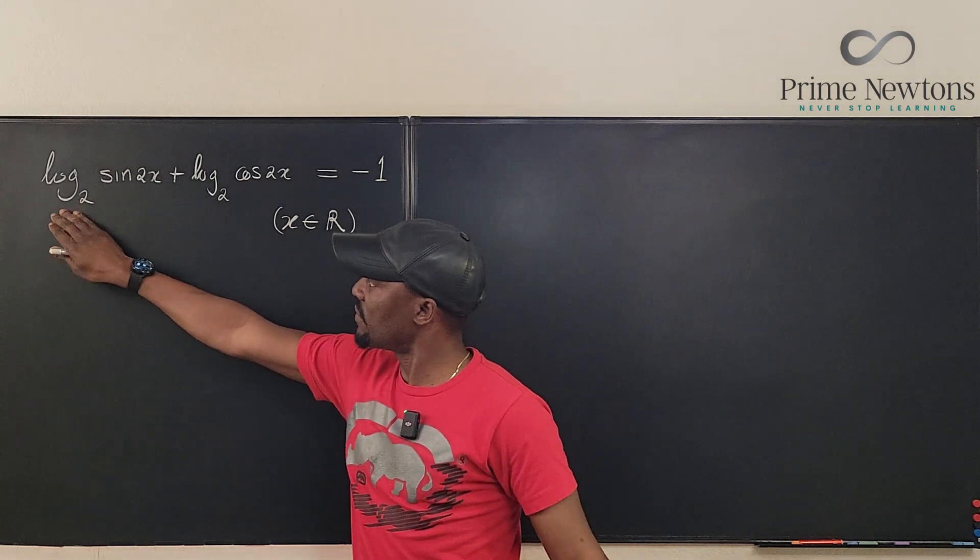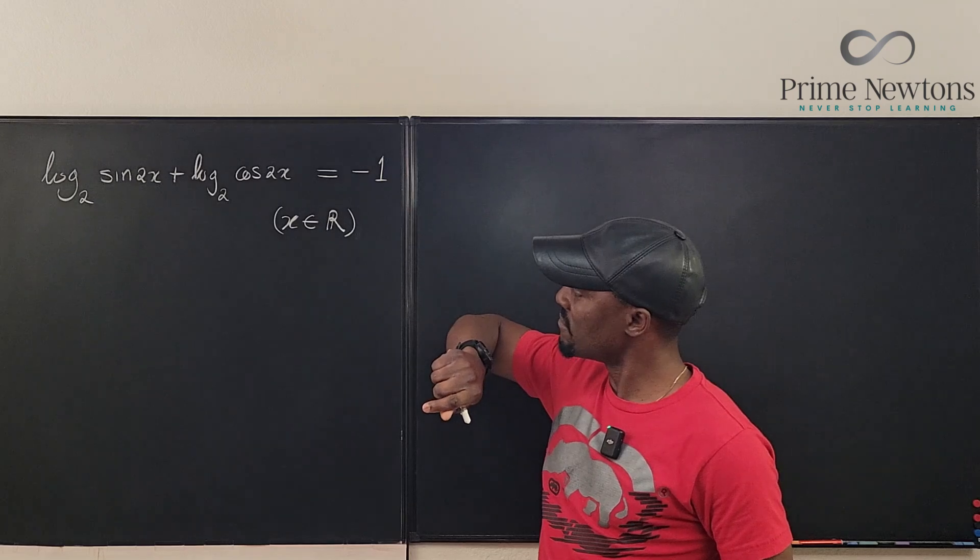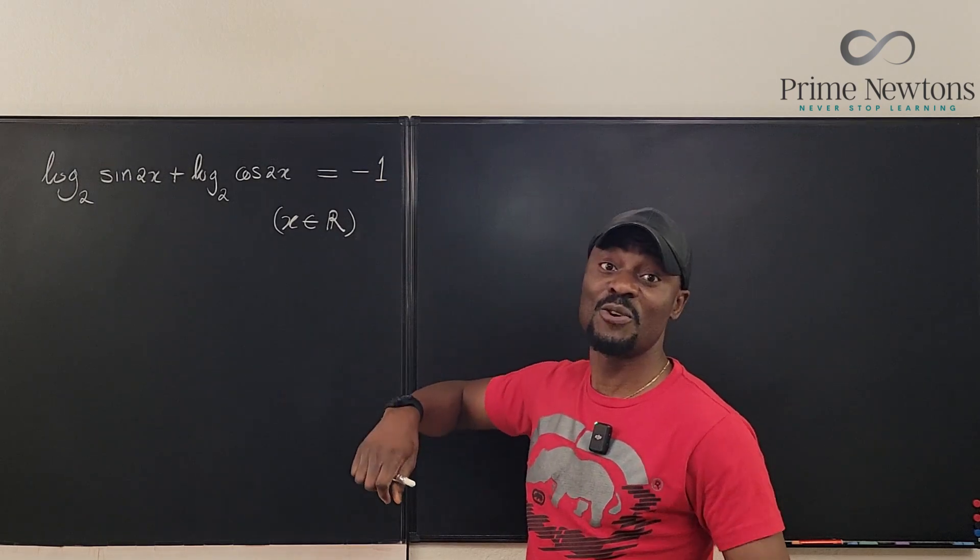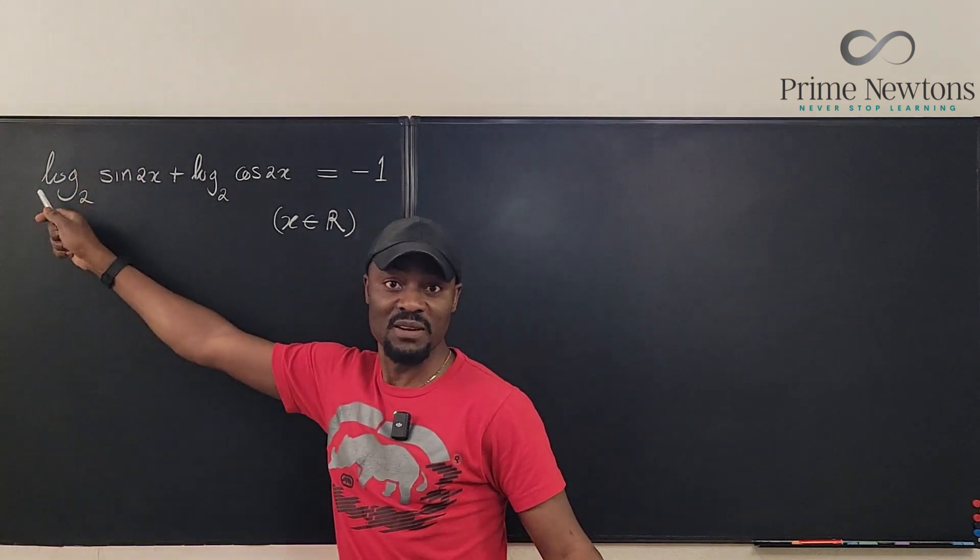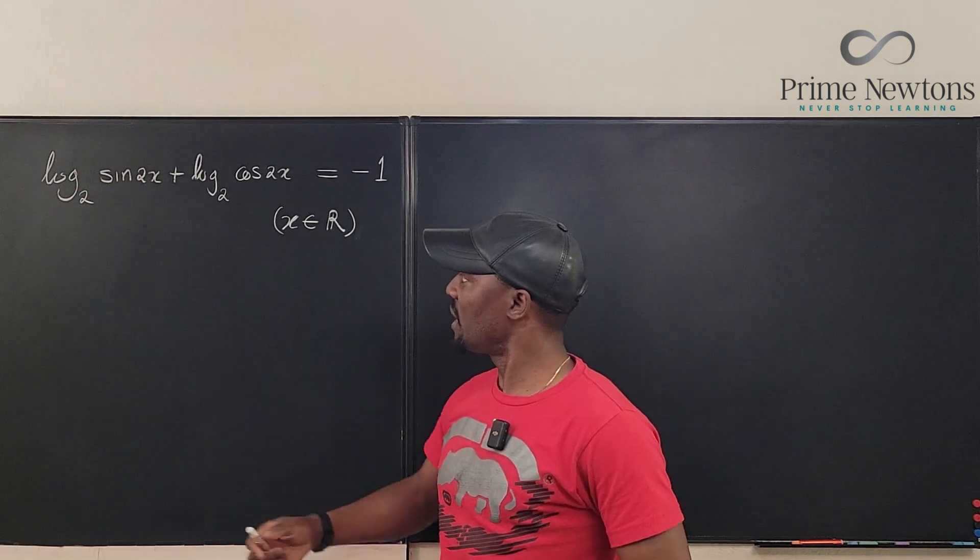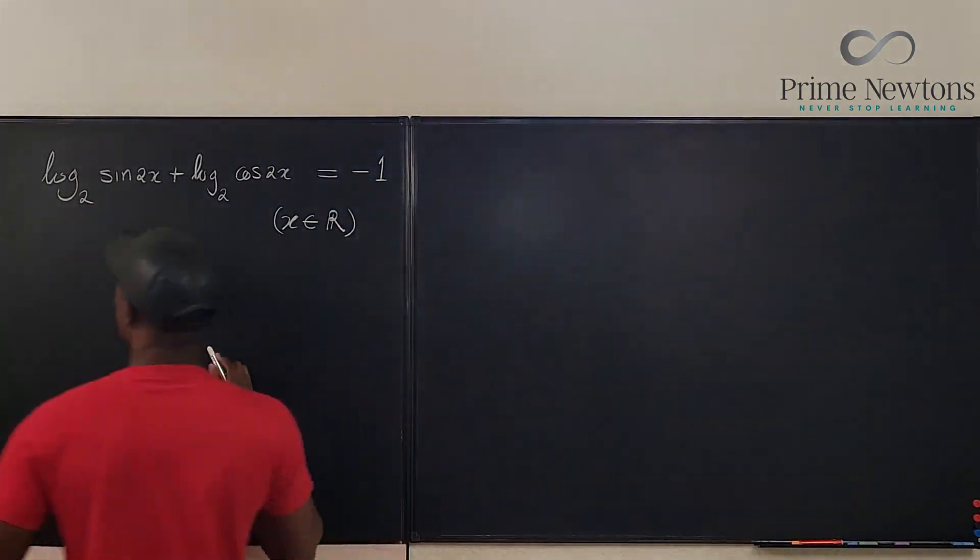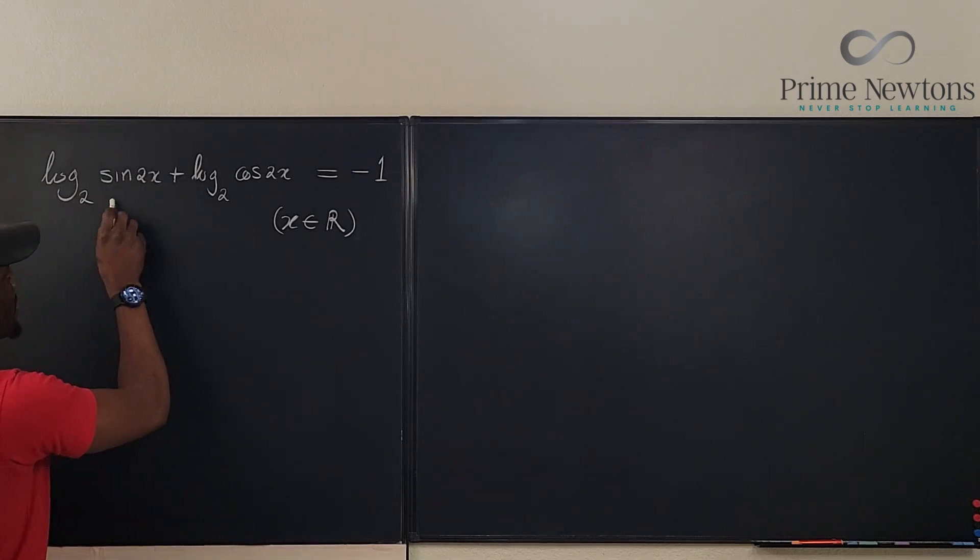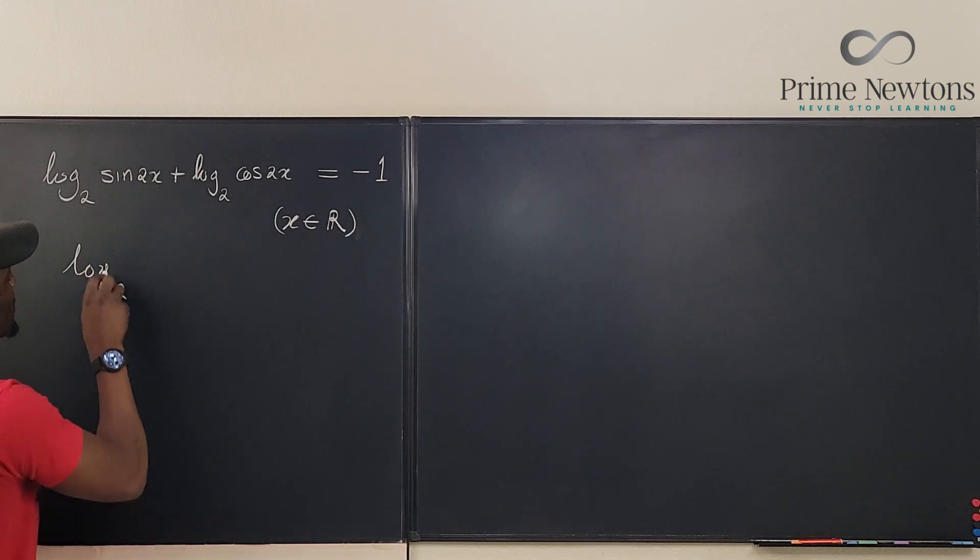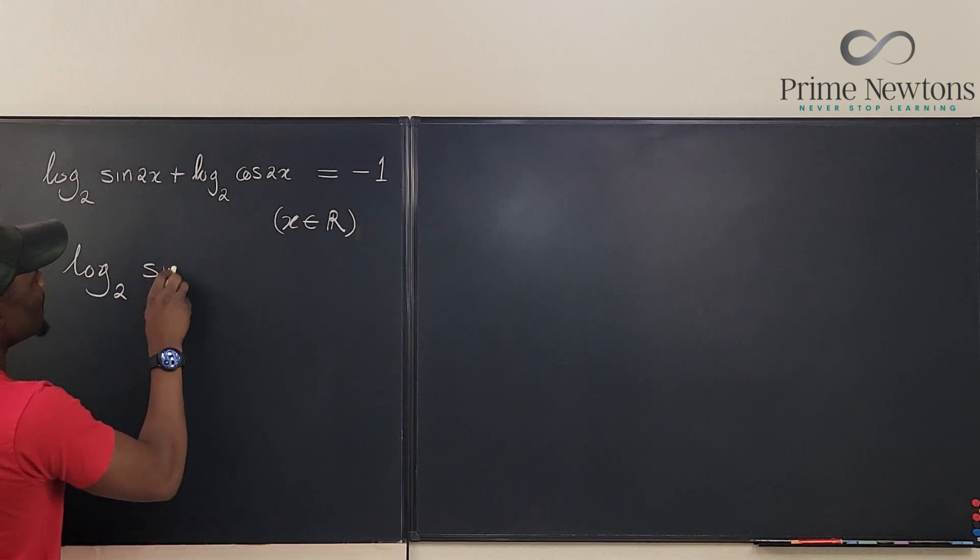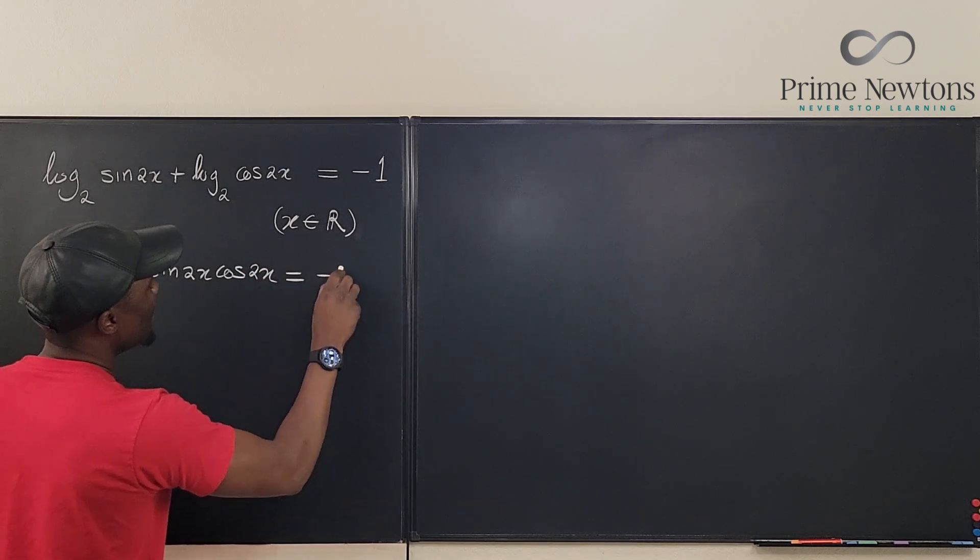The argument of the log function is sine 2x, so definitely there's gonna be problems because every time this goes to zero there's gonna be a problem here. But it doesn't look like we need that. I think we just need to combine these by applying the log rule that says the sum of two logs is the log of the product, so we can say that this is log base 2 of sine 2x cosine 2x and that would be equal to negative 1.